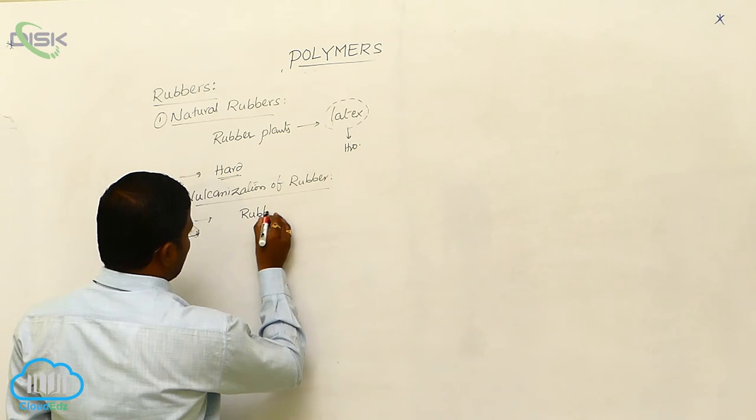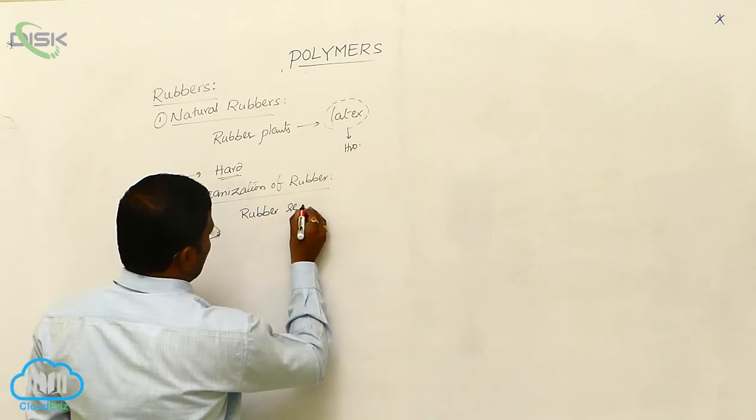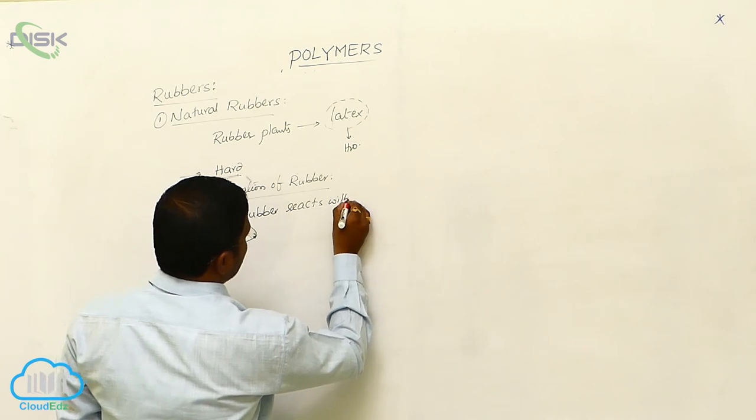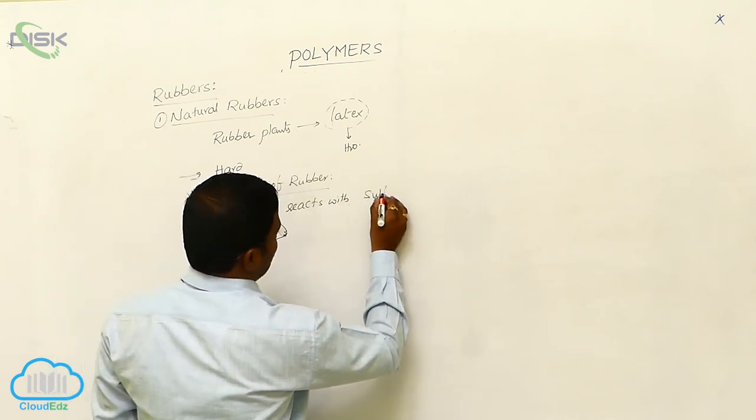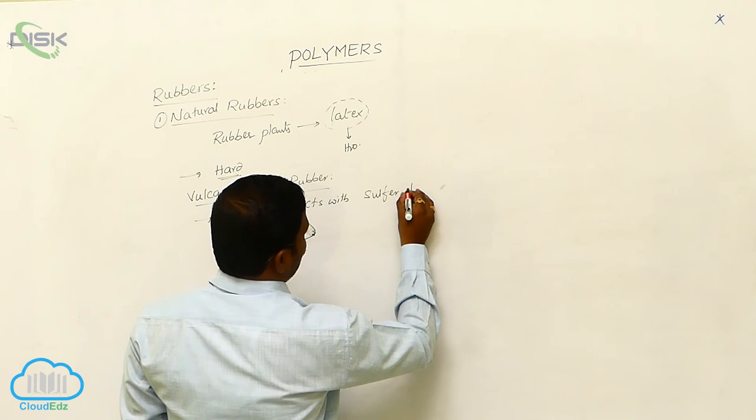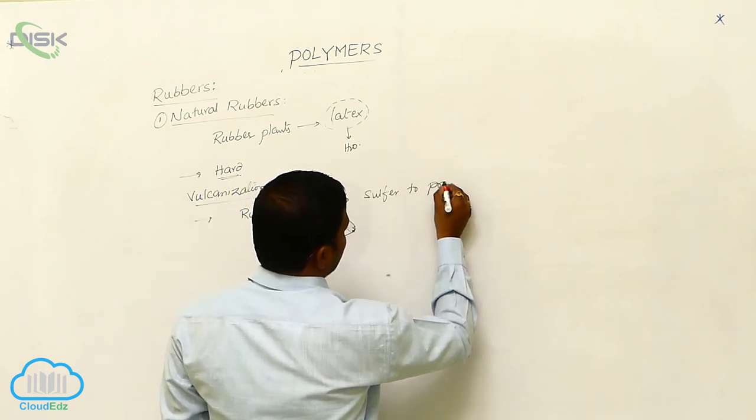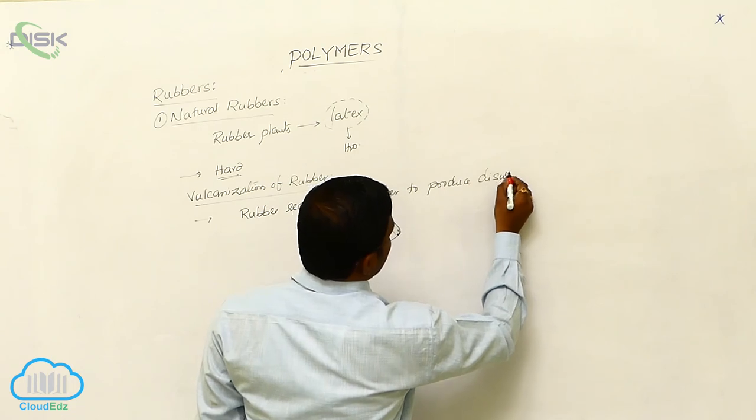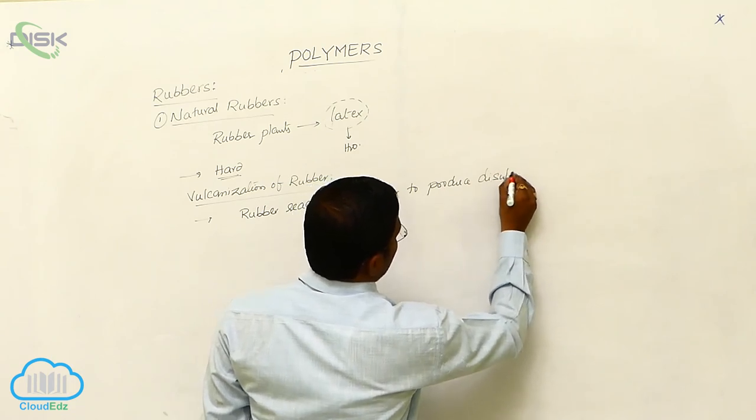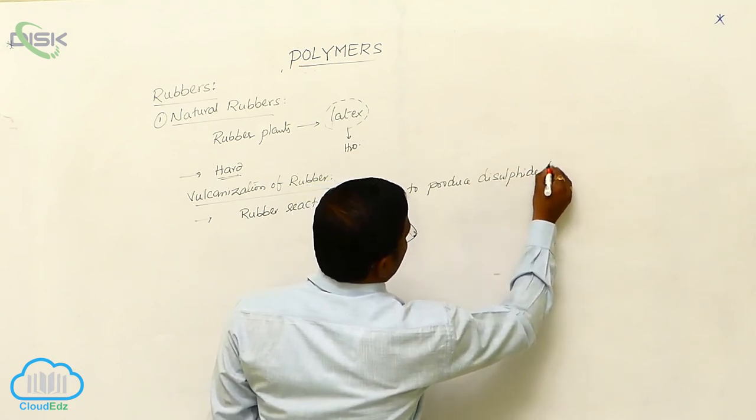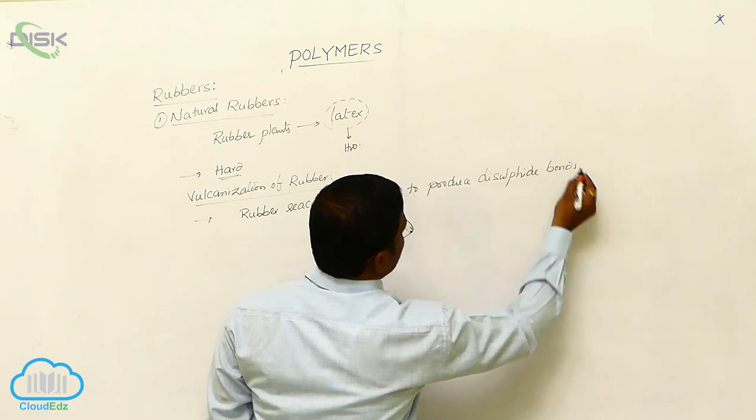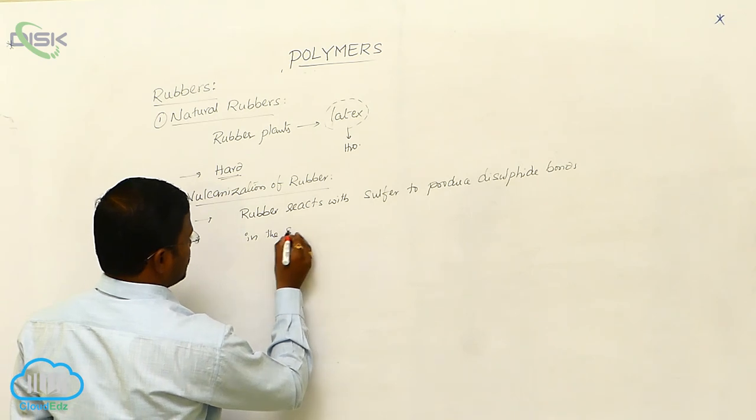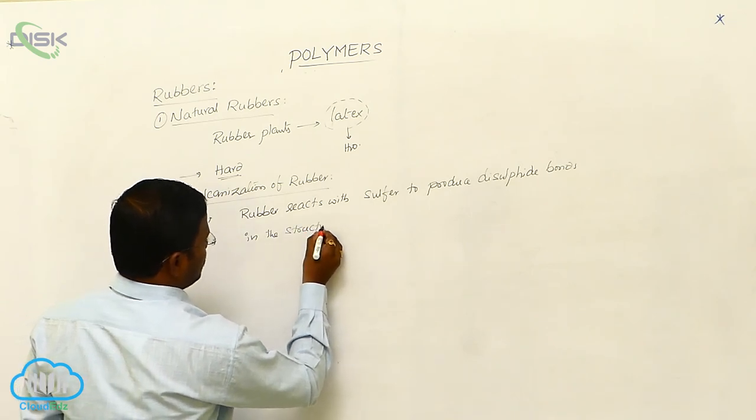Rubber reacts with sulfur to produce disulfide bonds, disulfide bonds in the structure.